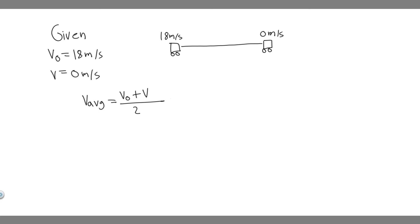So if we want to calculate the average velocity, we know v sub 0 is 18, we know the final velocity is 0, and then we're dividing by 2. So 18 divided by 2 is going to be 9. We're measuring it in meters per second, so 9 meters per second.